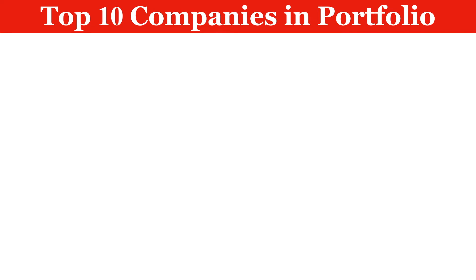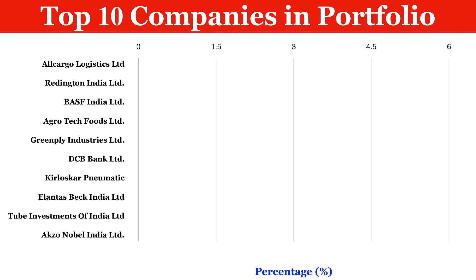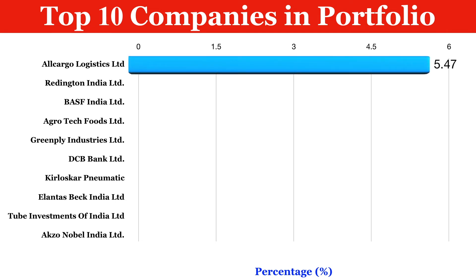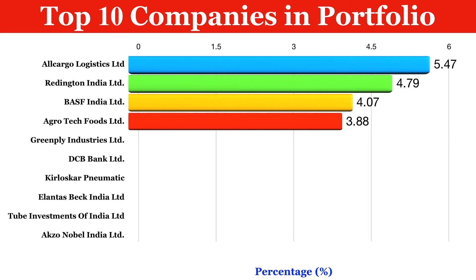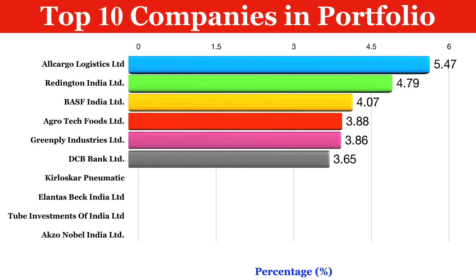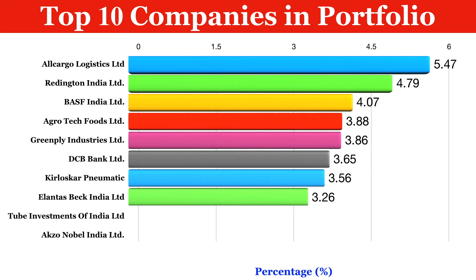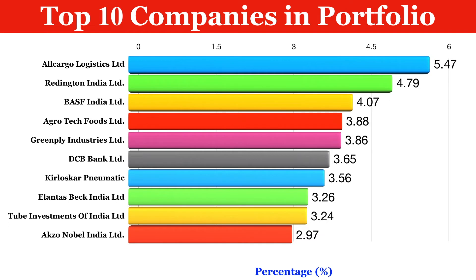In this section we will see the top 10 companies in this portfolio along with their percentage allocation. Algoro has 5.47%, Redington India has 4.79%, BASF India Limited has 4.07%, Agro Tech Foods has 3.88%, Greenpanel Industries Limited has 3.86%, DCB Bank has 3.65%, Kirloskar Pneumatic has 3.56%, Allance Tech Pack India Limited has 3.26%, and Cube Investment of India Limited has 3.24%.